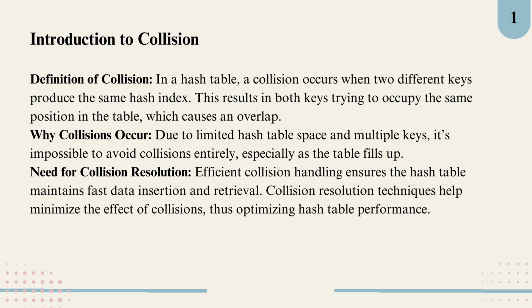Imagine you have a function that maps different values to specific slots in a table, like assigning seats to people in a stadium. Now if two different people both get assigned to the same seat, that's a collision. In hash tables, this means two different keys generate the same hash value and end up at the same index. Collisions are a common issue especially as the table fills up and can slow down data retrieval if not handled properly.